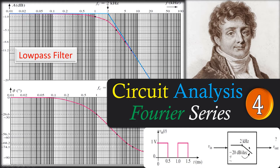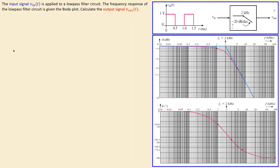Hi everyone and welcome back to a new video about circuit analysis using Fourier series, example number four. In this example we will look at a situation where we have a low pass filter with its own Bode diagram and we will then calculate the output voltage. The input voltage Vin is applied to a low pass filter circuit as shown here in block diagram. The input voltage is given by this figure, with one volt amplitude and a period of one millisecond, meaning a frequency of one kilohertz. The question here is: calculate the output voltage, Vout.